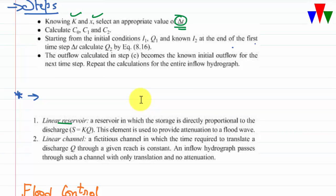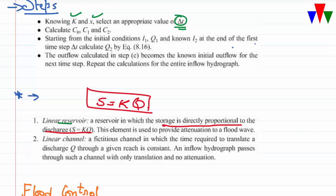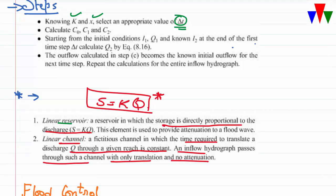A linear reservoir is one where storage is directly proportional to discharge only: S = f(Q). A linear channel is a hypothetical fixed channel where the time required to translate discharge through a reach is constant. In a linear channel, the inflow hydrograph passes through with only translation and no attenuation — the inflow and outflow peaks are at the same level with no reduction in peak discharge.